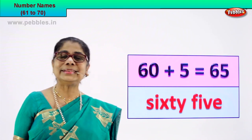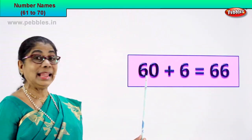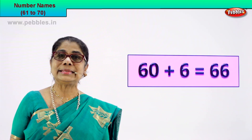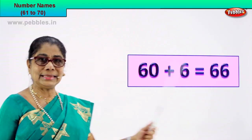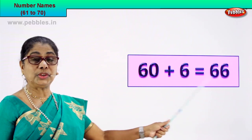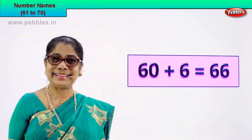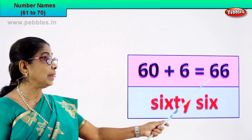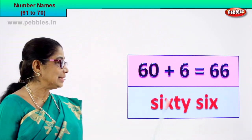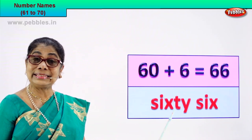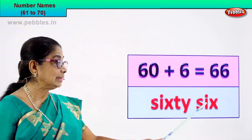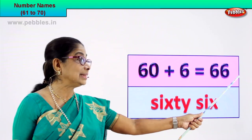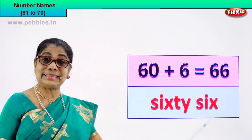Shall we take our next number? Okay! 60 plus 6 is equal to 66. 66 is the numeral. How do we write its name? Spell and write its name. You know to spell 60, you know to spell 6. S-I-X-T-Y, and S-I-X. 66 — numeral 66. Its name is sixty-six.